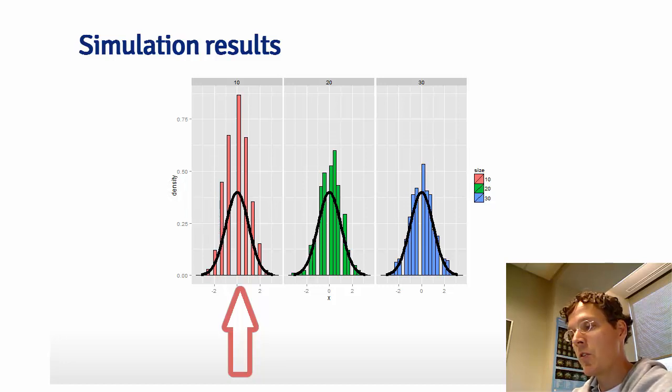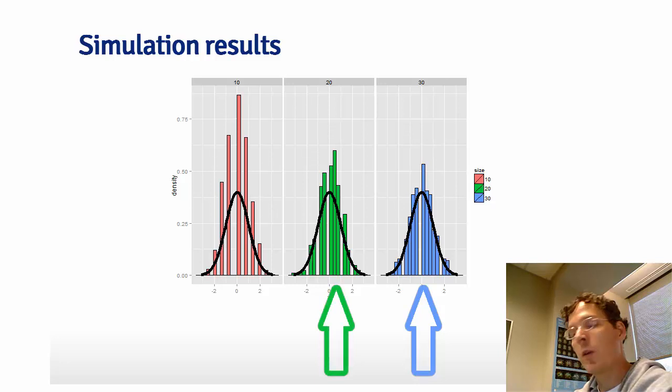You can see some of the discreteness, there's only two levels for a coin, so the average of 10 coin flips can only take so many different combinations, and so some of the discreteness is showing through. But when we get to 20 or 30 coin flips, we can see that it actually looks quite Gaussian.